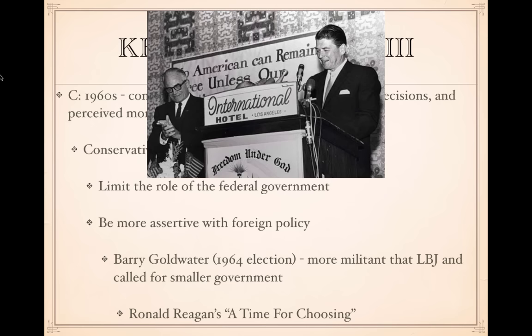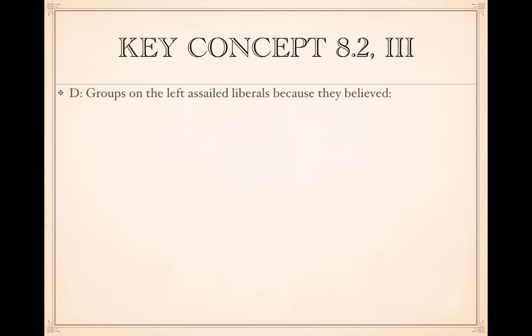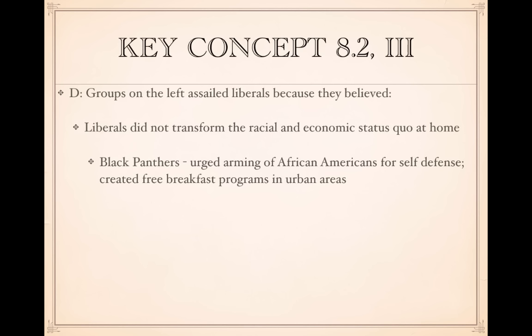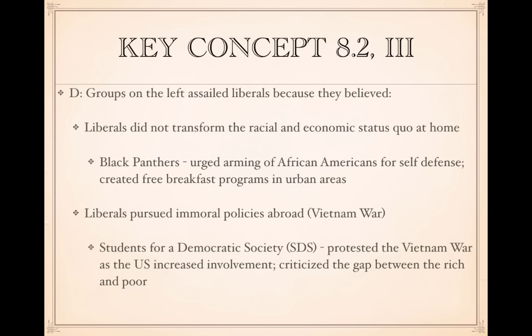Groups on the left attacked liberals because they didn't think they went far enough, especially on racial and economic issues. The Black Panthers urged arming African Americans for self-defense and also created free breakfast programs for children in urban areas. Liberals were also criticized for pursuing morally questionable policies abroad, particularly the Vietnam War. The Students for a Democratic Society protested U.S. involvement in Vietnam, criticized the gap between rich and poor, and inspired marches, sit-ins, and teach-ins.